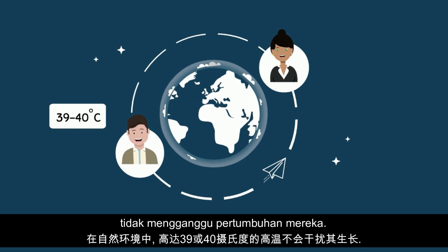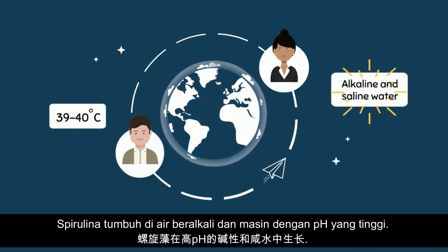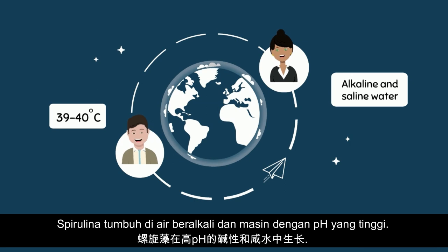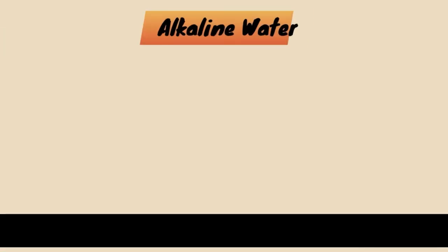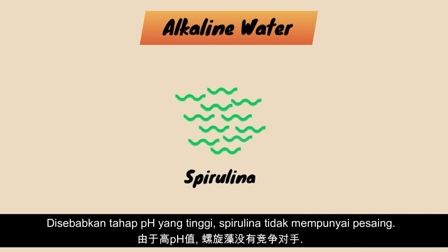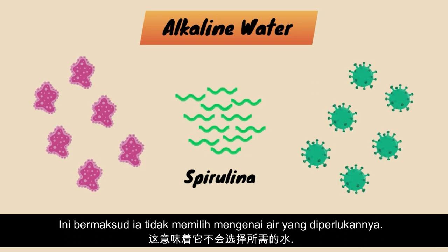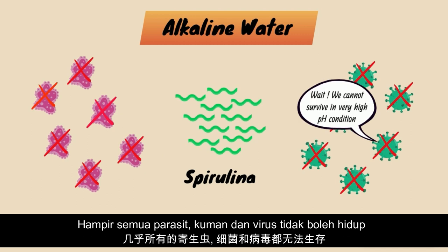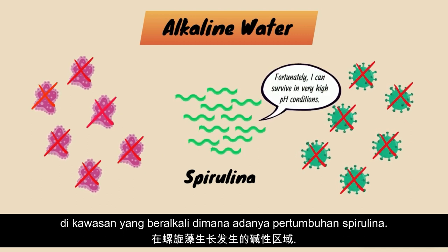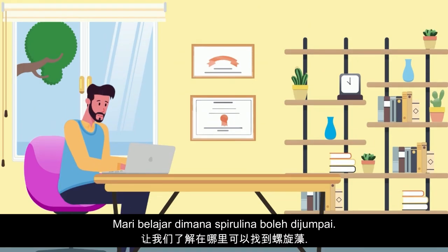In nature, high temperatures up to 39 or sometimes 40 degrees Celsius don't bother spirulina. Spirulina thrives in alkaline and saline water with very high pH. Due to the high pH in the water, spirulina has almost no competitors, as almost all parasites, germs, and viruses cannot survive the alkaline environment in which spirulina thrives.